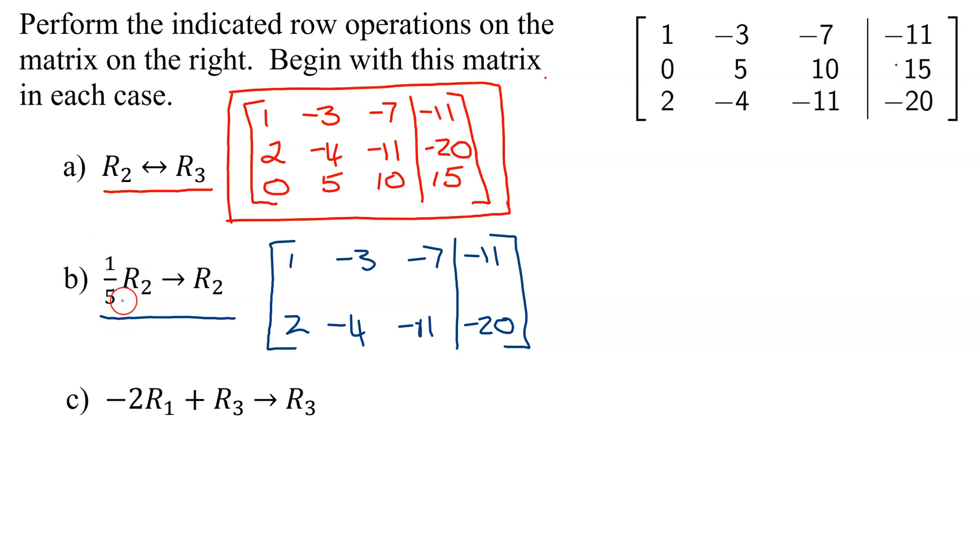And now for row 2, I have to multiply it by 1/5. If you don't like multiplying by 1/5, remember it's the same as dividing by 5. So 0 divided by 5 is 0, 5 divided by 5 is 1, 10 divided by 5 is 2, and 15 divided by 5 is 3. So this is the answer to part B.